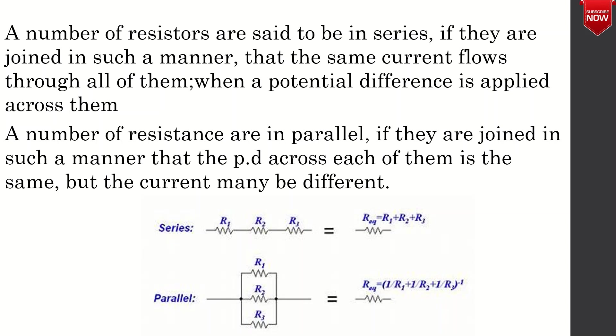A number of resistors are in parallel if they are joined in such a manner that the potential difference across each of them is the same but the current may be different.